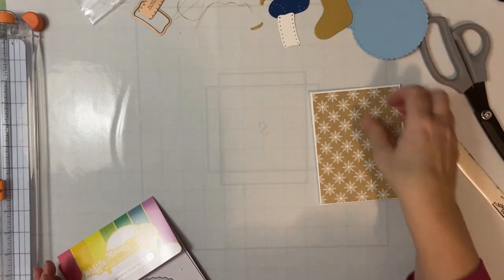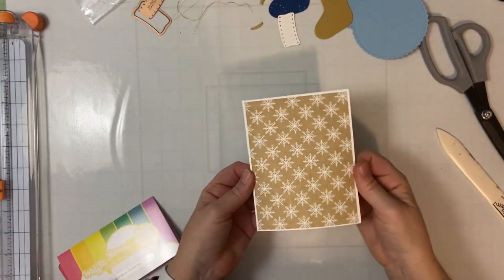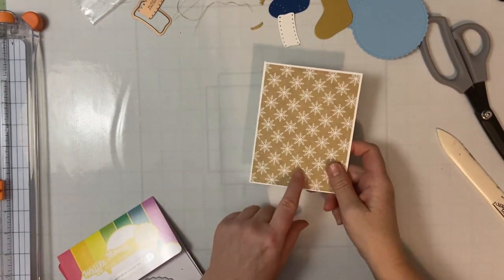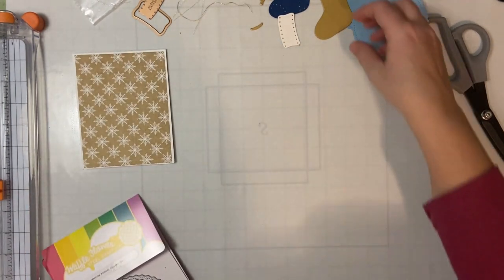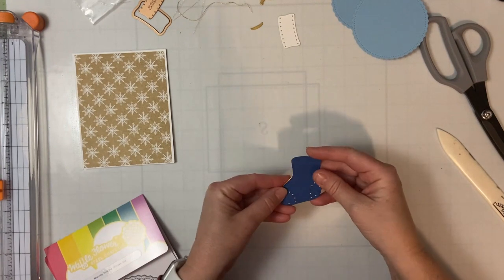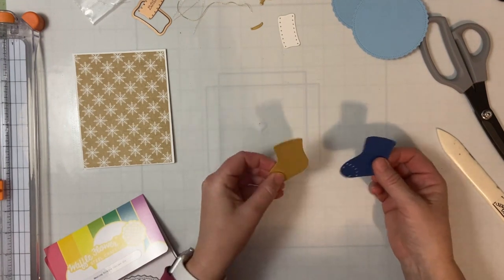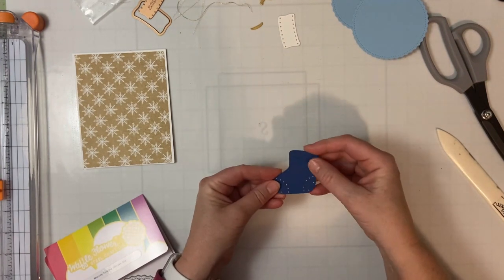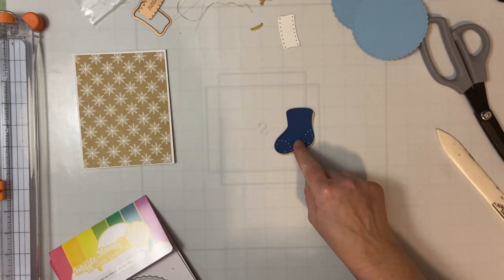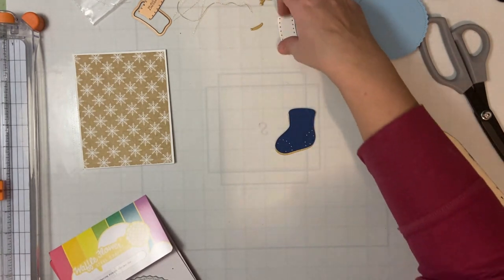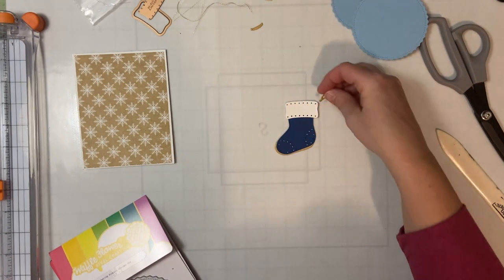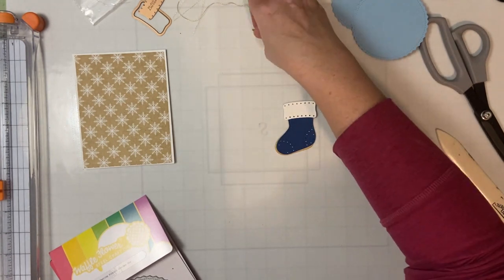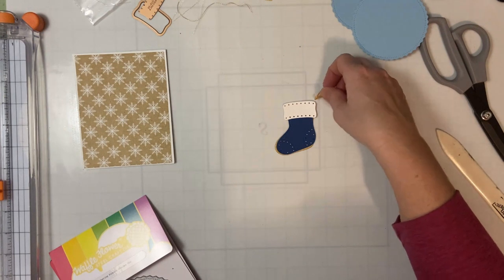Everything is cut and I've gone ahead and already adhered my background. So I've chosen this white snowflake on craft for the background and for my stocking I have a solid gold one for the back and then I cut the stocking part out of a dark blue and then the top out of white and then I cut the little hanger out of gold.